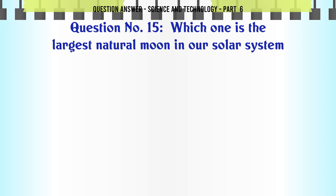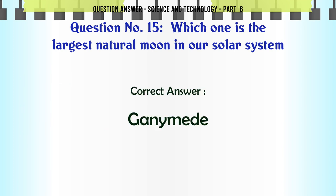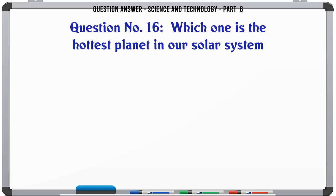Which one is the largest natural moon in our solar system? A. Callisto. B. Europa. C. Ganymede. D. Amalthea. The correct answer is Ganymede.